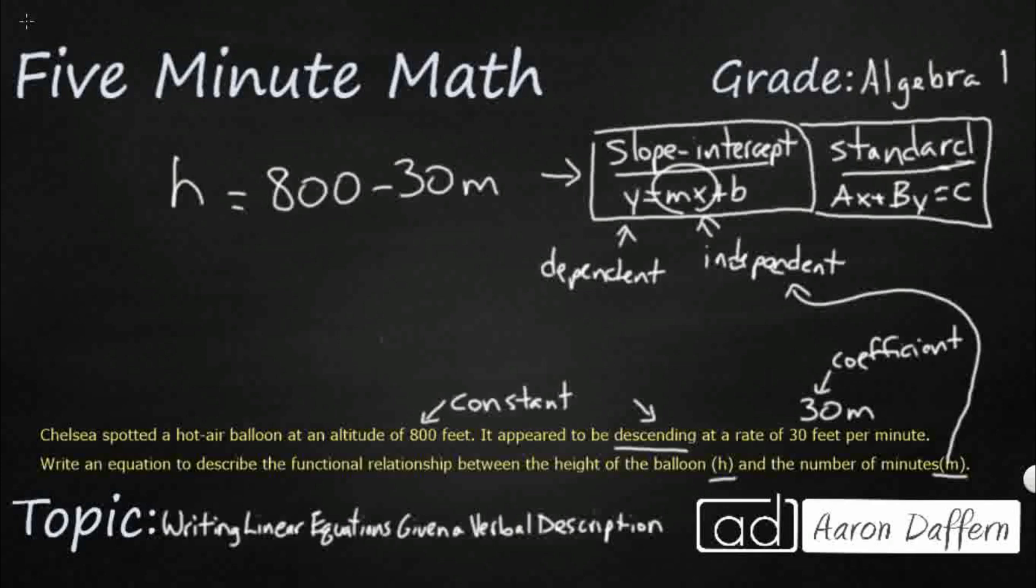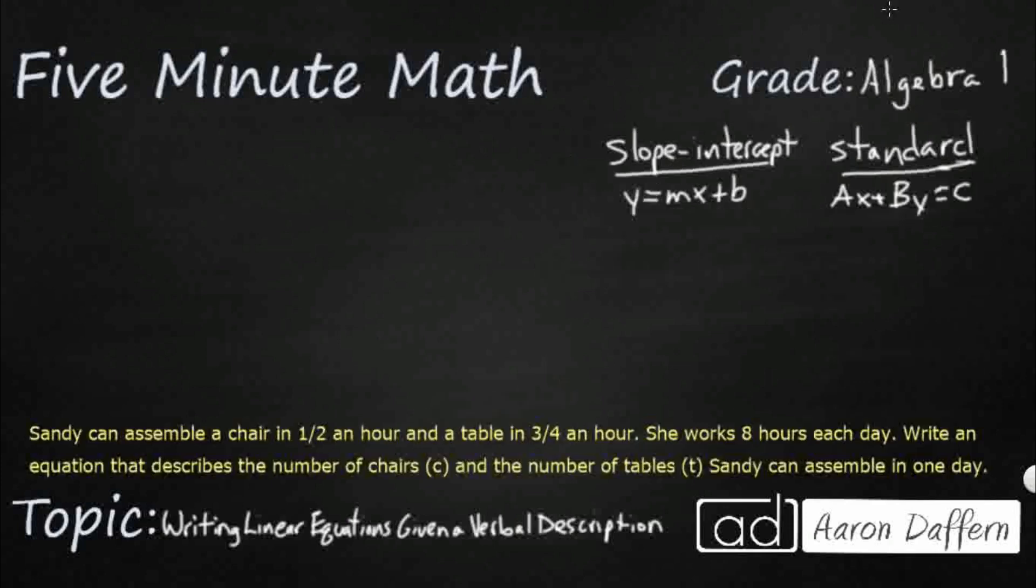Let's look at another example. So we have a new problem here. Sandy can assemble a chair in half an hour, a table in three quarters of an hour. She works eight hours each day. But take a look at this. We've got two different variables here.